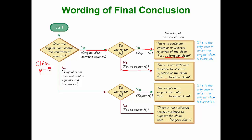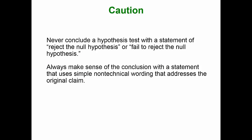If the original claim does not contain equality — such as p greater than 0.5, p less than 0.5, or not equal — then it becomes the alternative hypothesis. If we reject the null, we say: 'The sample data support the claim that...' If we fail to reject the null, we say: 'There is not sufficient sample evidence to support the claim that...' Never conclude a hypothesis test with simply 'reject the null hypothesis' or 'fail to reject the null hypothesis.' Always make sense of the conclusion with simple, non-technical wording that addresses the original claim.